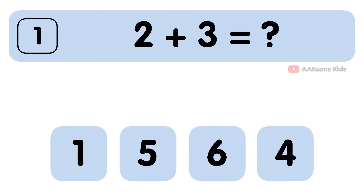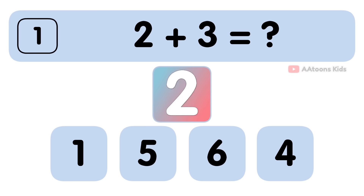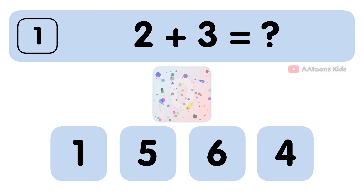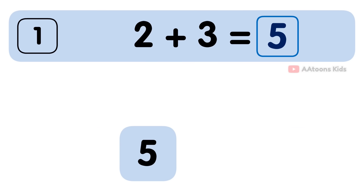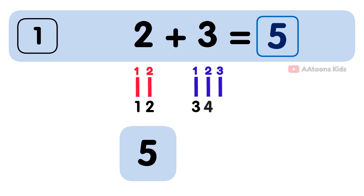2 plus 3 is equal to 5. Let's add the numbers 2 and 3. Now count together: 1, 2, 3, 4, 5. So the answer to 2 plus 3 is 5.